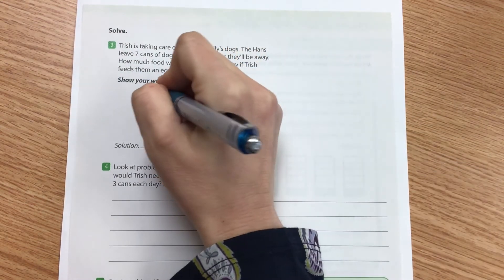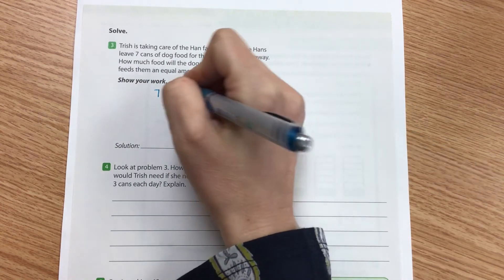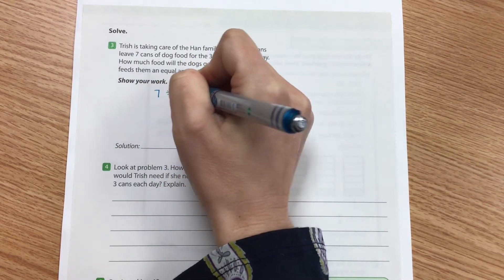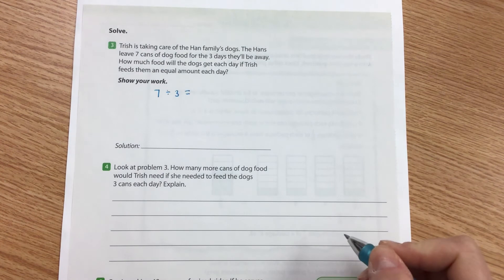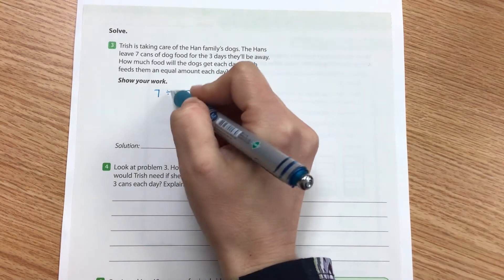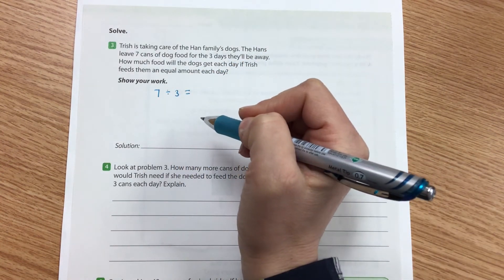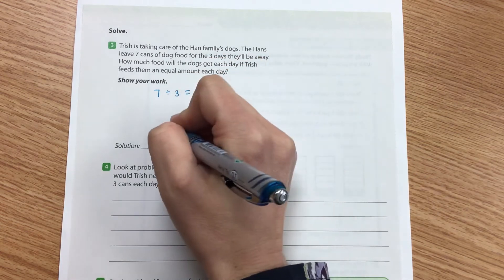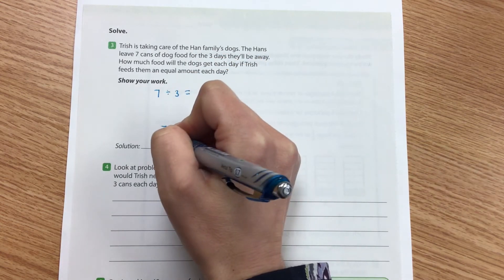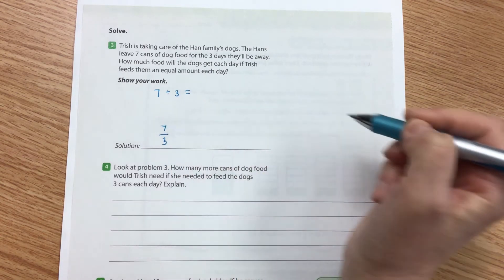So I'm going to take my seven cans of dog food and divide it by three days. This is where I'm showing my work. And remember this division sign is the same thing as a fraction bar. So my answer is seven over three, which is the same thing as saying seven divided by three.